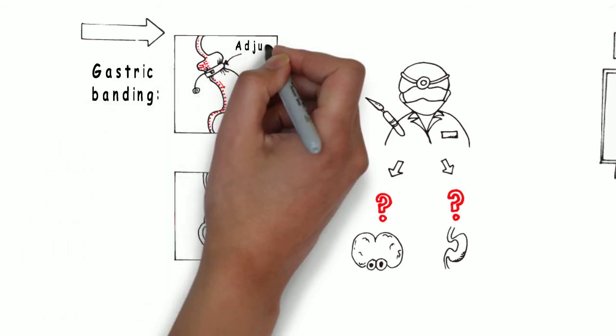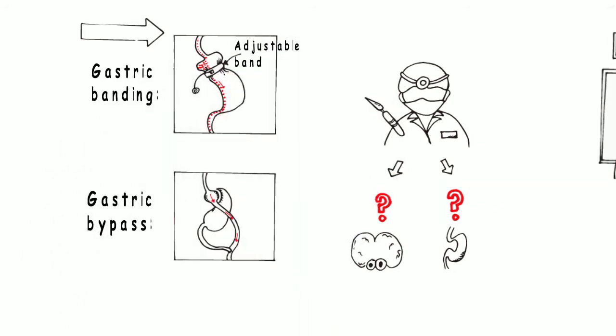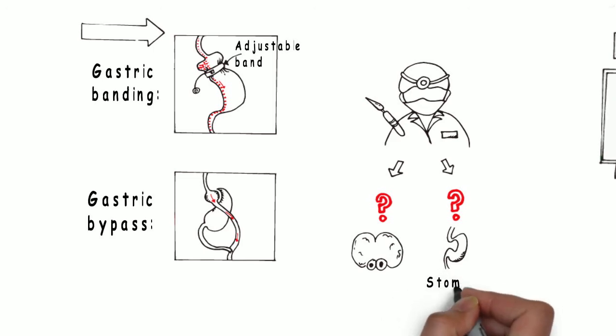Surgical treatments for obesity include gastric banding and gastric bypass. These patients have operations on their stomachs and lose a quarter of their weight, but often they come back to clinic and ask, Doctor, where did they operate? Did they operate in my tummy or did they operate in my head?